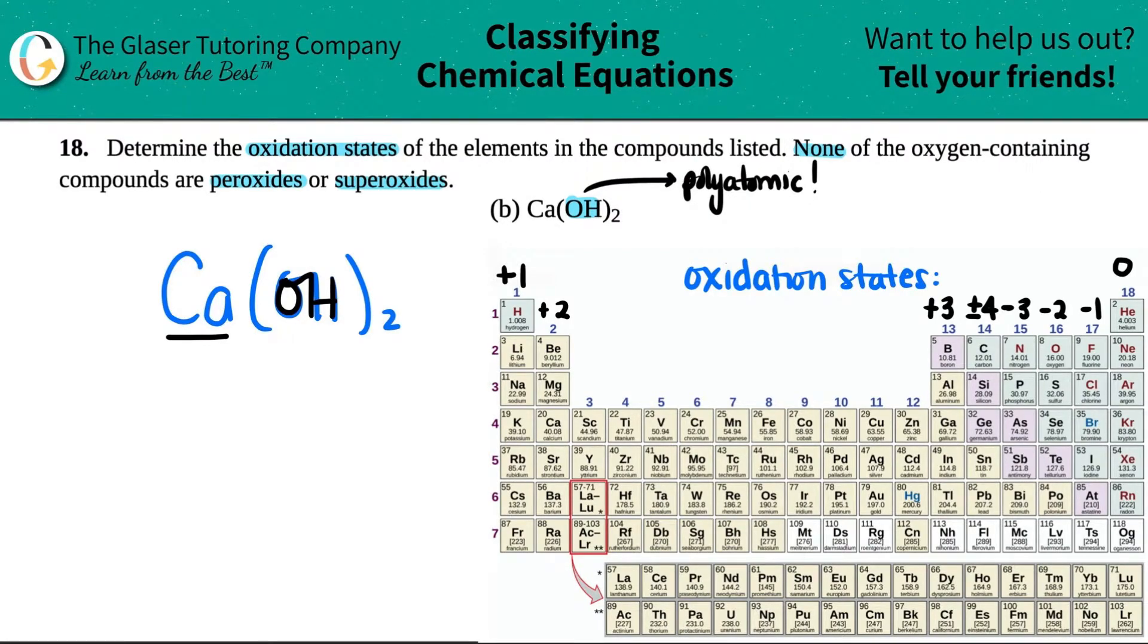Remember when we made compounds, we had charges in the upper right-hand corner and then we crisscross them down to get the compound. We're just doing the opposite here. We're going to take the subscripts and crisscross them back up to see what we get, and what we get is the oxidation states, aka the charges.